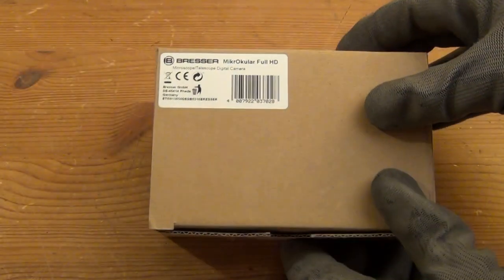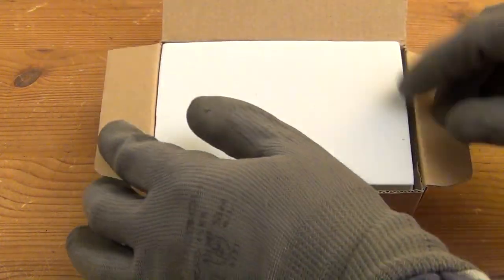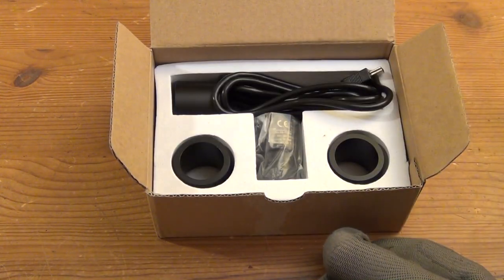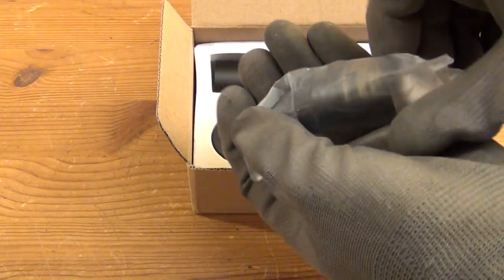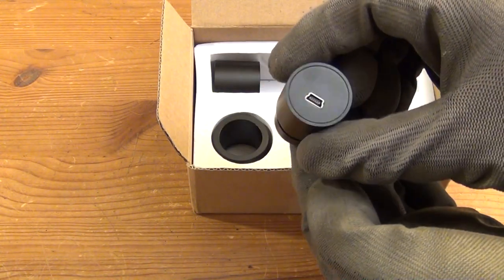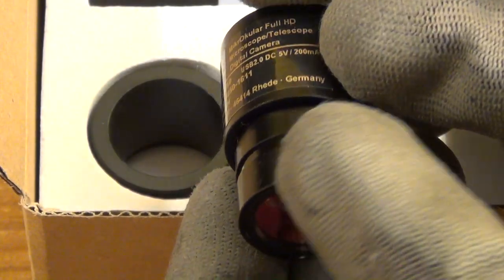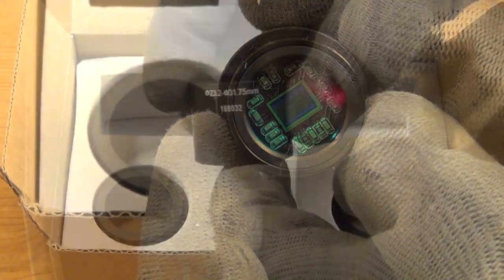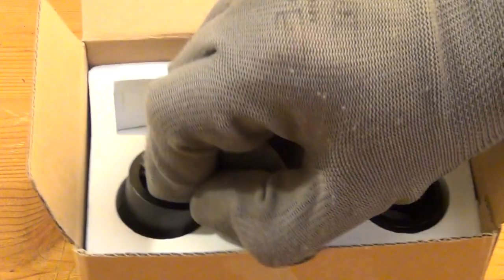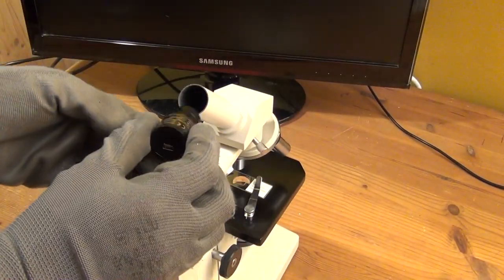And I have now ordered this microscope USB camera module here, which was also manufactured by Bresser, the same company that actually made the microscope back in the 90s. And I paid 60 euros for this. And I will now set this up and show you some footage. As you can see, this set also comes with three different adapter pieces that can be used to fit this module onto differently sized eyepiece tubes. And the eyepiece is removed and the USB camera module is inserted.